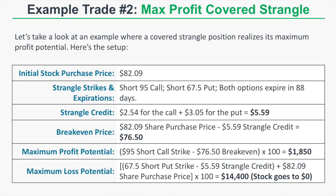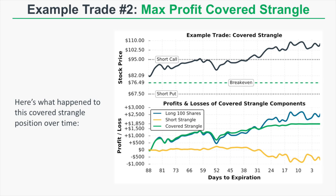Looking at the performance through time: the stock price rises significantly above the $95 short call strike price. Since the stock is above the short call strike at expiration, the covered strangle realizes its maximum profit of $1,850. The profit reaches $1,850 and cannot go higher.